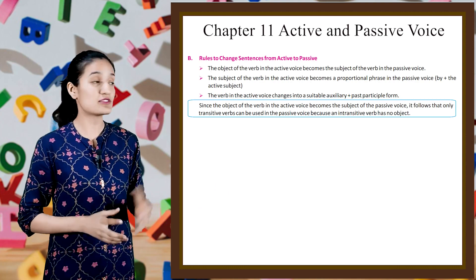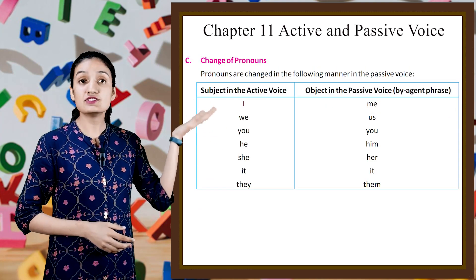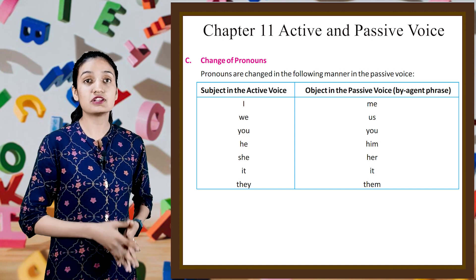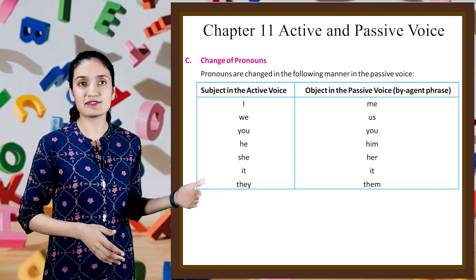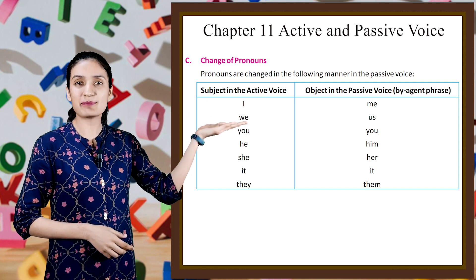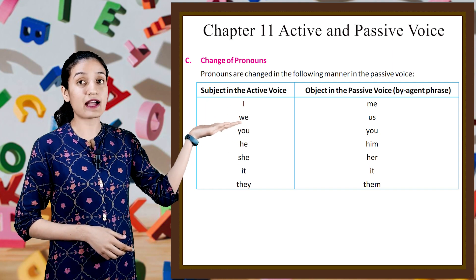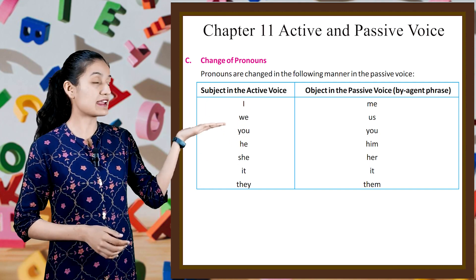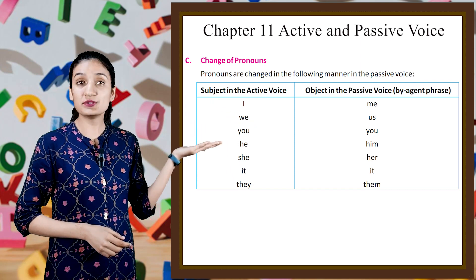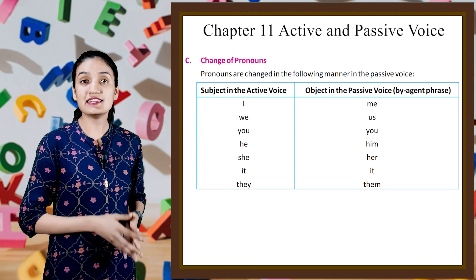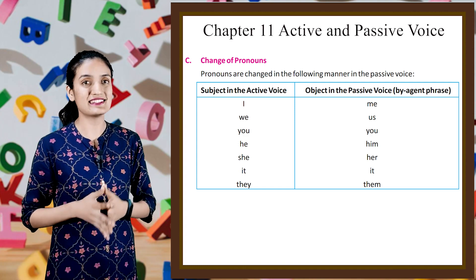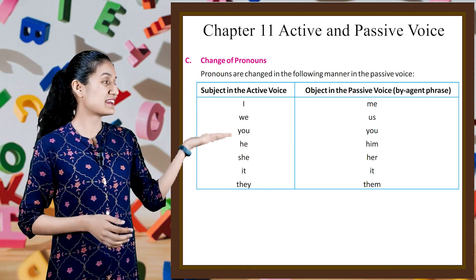Now let's move on to part C: change of pronouns. Pronouns are changed in the following manner in the passive voice. Here is the table — subject in the passive voice / object in the passive voice by agent phrase: I → me, we → us, you → you, he → him, she → her, it → it, they → them.